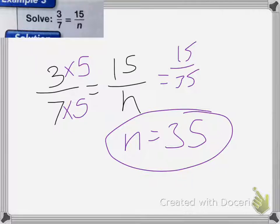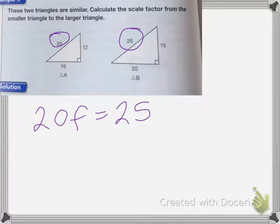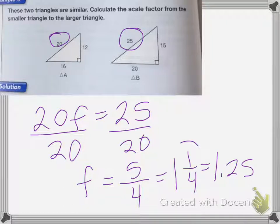And that can be a lot easier than doing the cross products. All right, so these two triangles are similar. Calculate the scale factor from the smaller triangle to the larger triangle. So we're going to multiply the length of one side of the smaller triangle by the scale factor to get the length of the other side of the larger triangle. So we would have one of the sides of triangle A. So I'm going to choose 20. So I have 20 times some scale factor is going to equal 25 on this side. So to figure out what that scale factor is, I'm going to divide both sides by 20. So F equals 25 over 20, which reduces to 5 fourths, which could be 1 and 1 fourth, or even 1.25. Either of those are correct. So this is the scale factor when changing from the smaller triangle to the larger triangle.